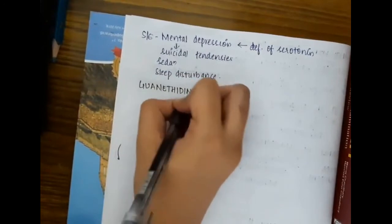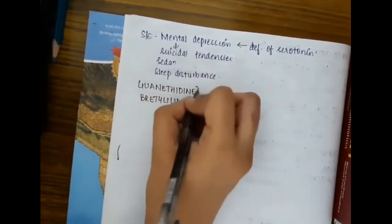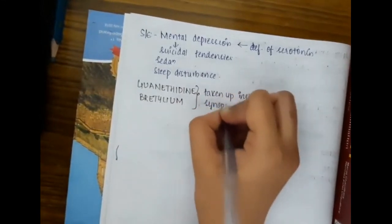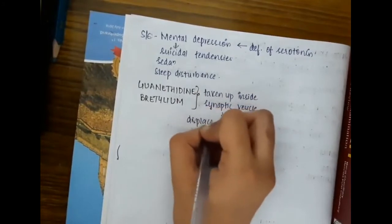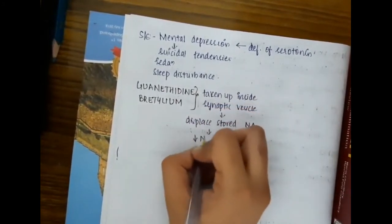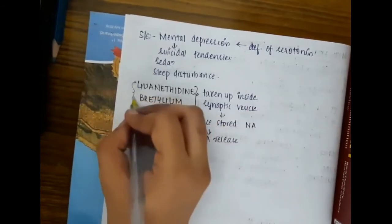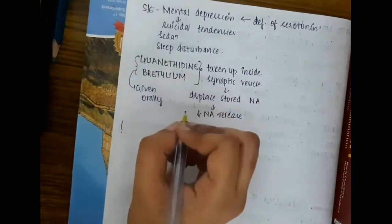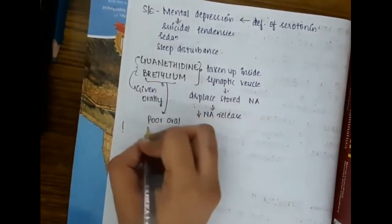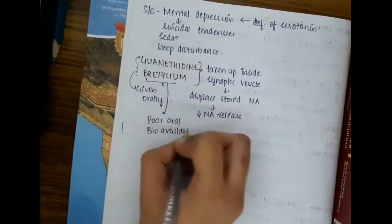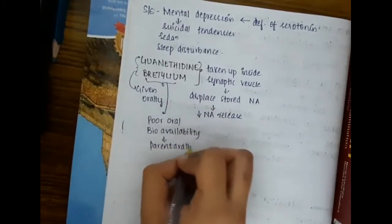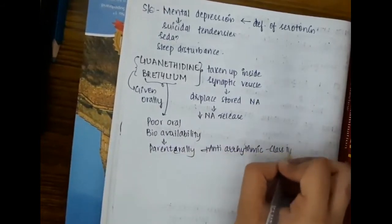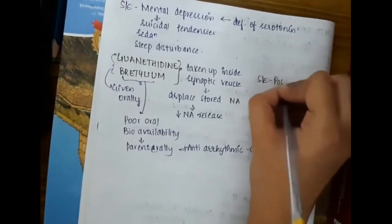Guanethidine and bretylium are taken up inside the synaptic vesicles and displace stored noradrenaline, thus decreasing noradrenaline release. These drugs are given orally. Bretylium has poor oral bioavailability and is used parenterally as a class 3 antiarrhythmic drug.